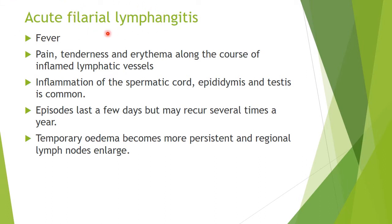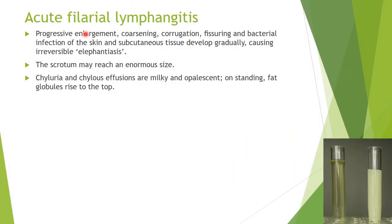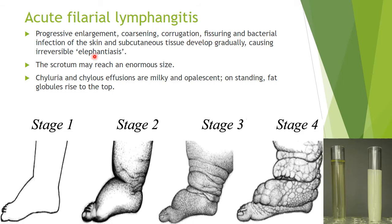The features of acute filarial lymphangitis include fever, pain, tenderness, and erythema along the course of the inflamed lymphatic vessels. Inflammation of the male genital tract — including the spermatic cord, epididymis, and testis — is common. Episodes usually last a few days but can occur several times a year. Repeated bouts of lymphangitis cause initially temporary edema that becomes more persistent, with regional lymph node enlargement.